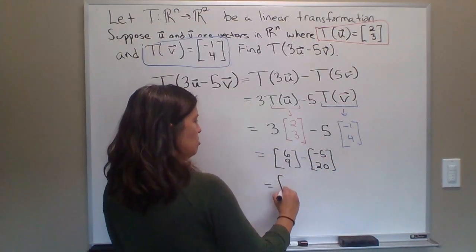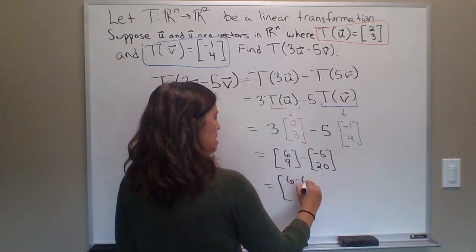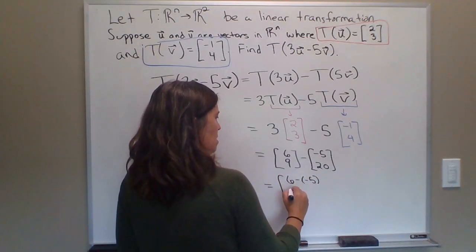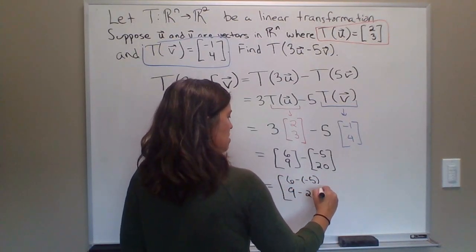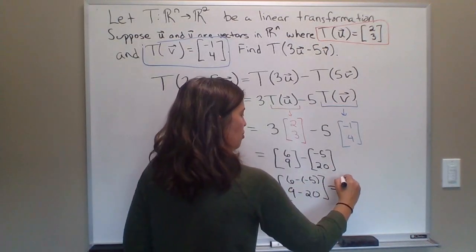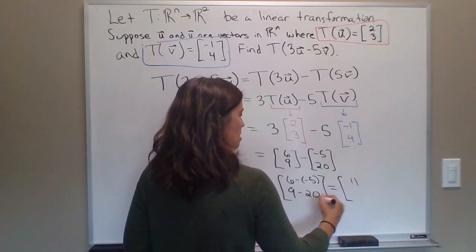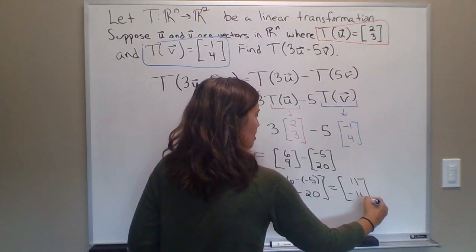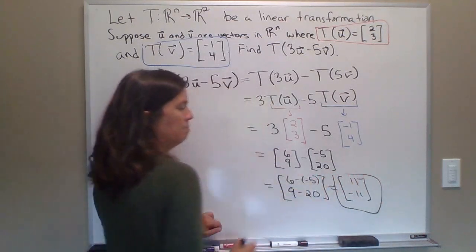And then subtract the corresponding entries. So this is equal to 6 minus negative 5 here, and 9 minus 20. So this is 6 plus 5, which is 11, and 9 minus 20, which is negative 11. And that's it.